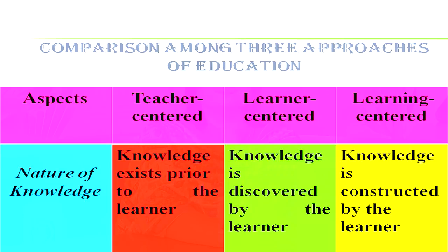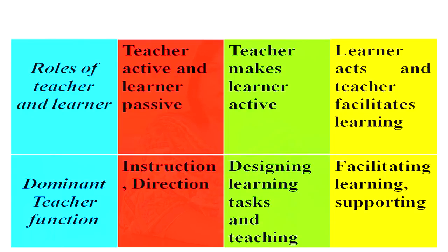Let us compare the three approaches: teacher-centered, learner-centered, and learning-centered. Regarding the nature of knowledge: in the teacher-centered approach, knowledge exists prior to the learner; in the learner-centered approach, knowledge is discovered by the learner; whereas in the learning-centered approach, knowledge is constructed by the learner. Regarding the role of teacher and learner: in teacher-centered, the teacher is active and learner is passive; in learner-centered, the teacher makes the learner active; in learning-centered, the learner acts and the teacher facilitates.